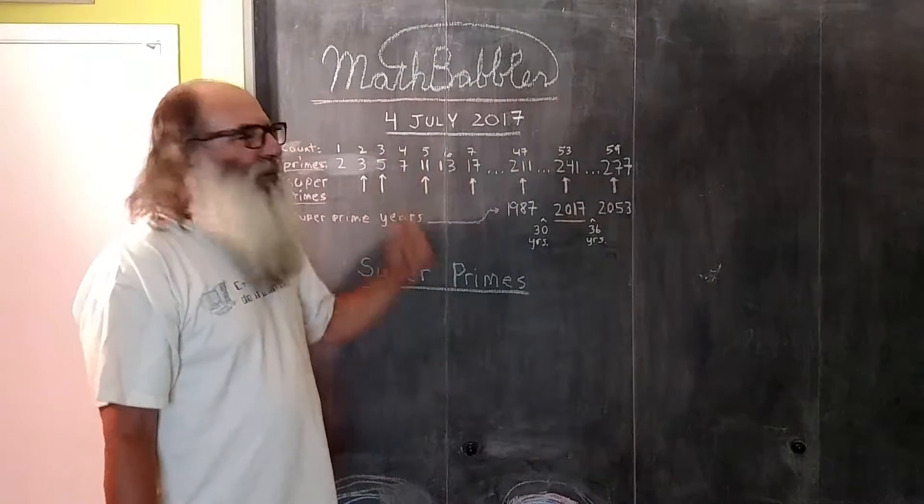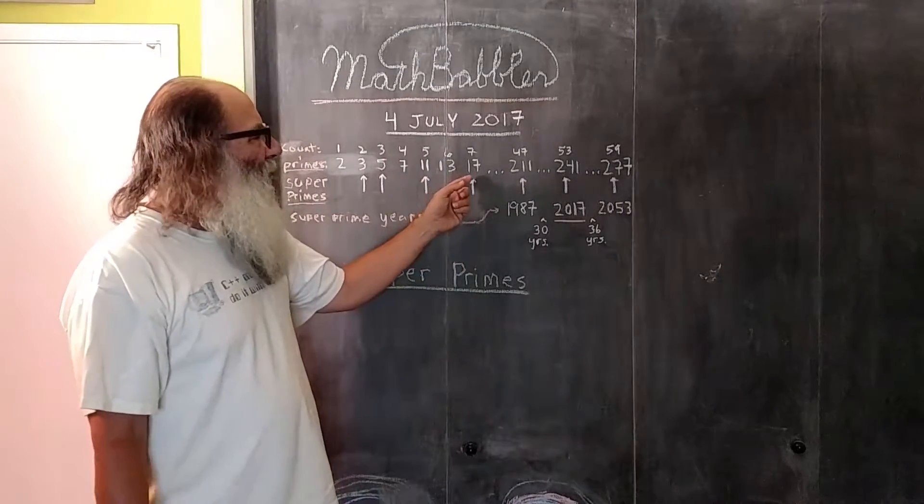13 is the 6th prime number. 6 is not prime, so 13 is not super prime. 17 is the seventh prime number. 7 is prime, so 17 is super prime.